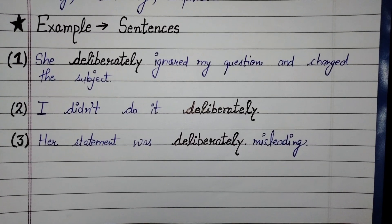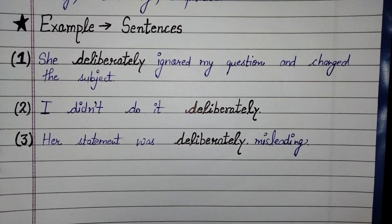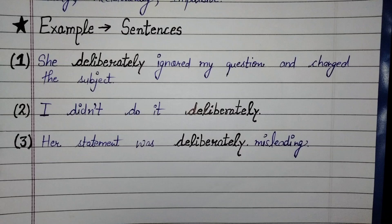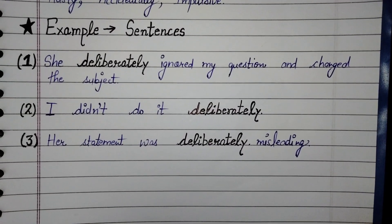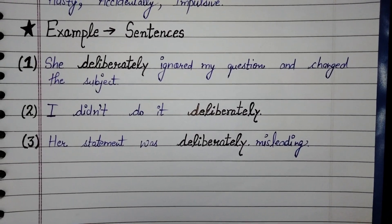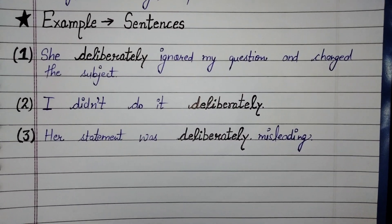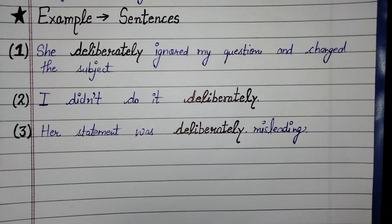Now, example sentences. First sentence: 'She deliberately ignored my question and changed the subject.' Yaini ki, Jaan-Boojh-Kar mere sawaal ko ignore kia aur subject change kar dia.